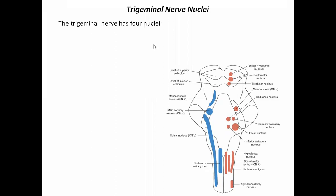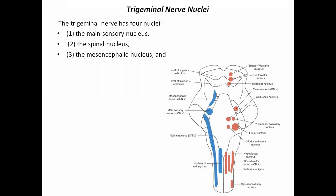To recap, the trigeminal nerve has four nuclei: the main sensory nucleus, the spinal nucleus, the mesencephalic nucleus, and the motor nucleus. It is important to remember that these nuclei are present bilaterally — on both the right and left sides — as cranial nerves are paired structures, not single structures.